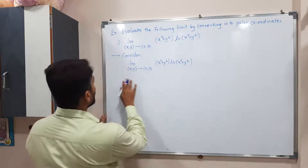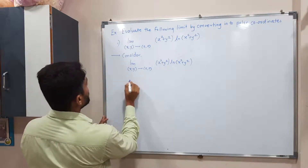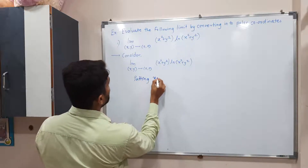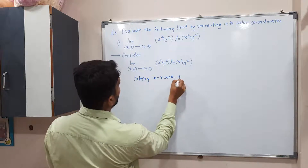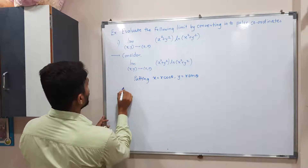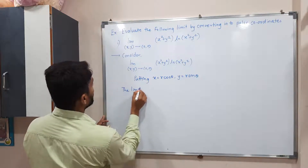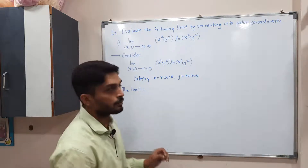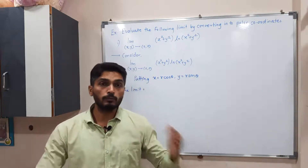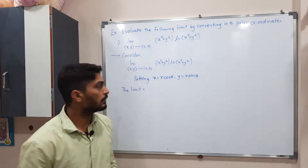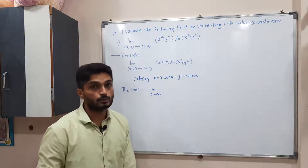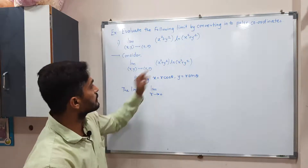To convert the problem into polar coordinates, we put x equal to r cosθ and y equal to r sinθ. Note that when we convert into polar coordinates, we write the limit as r tends to zero — we never write theta tends to zero, only r tends to zero.